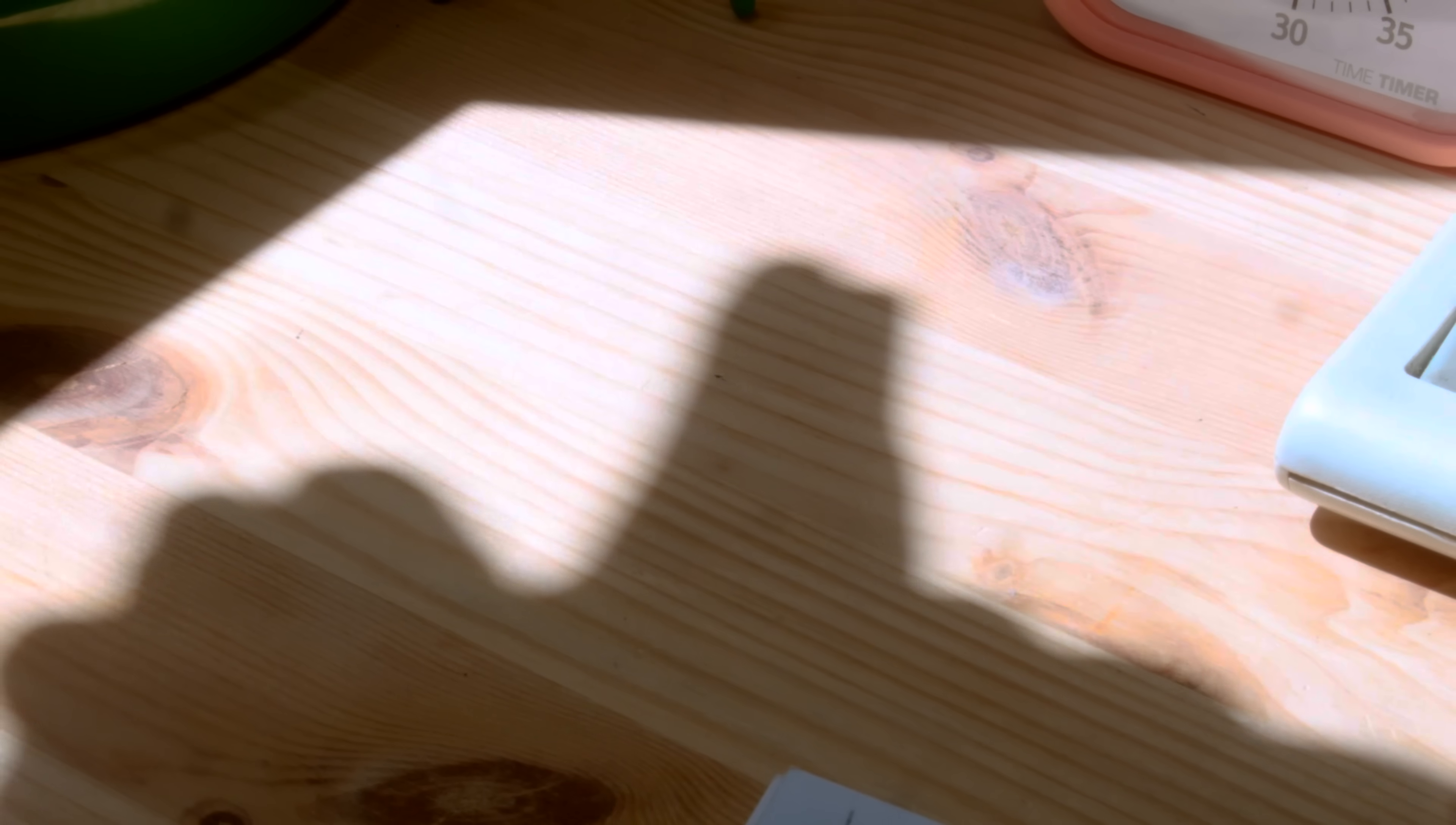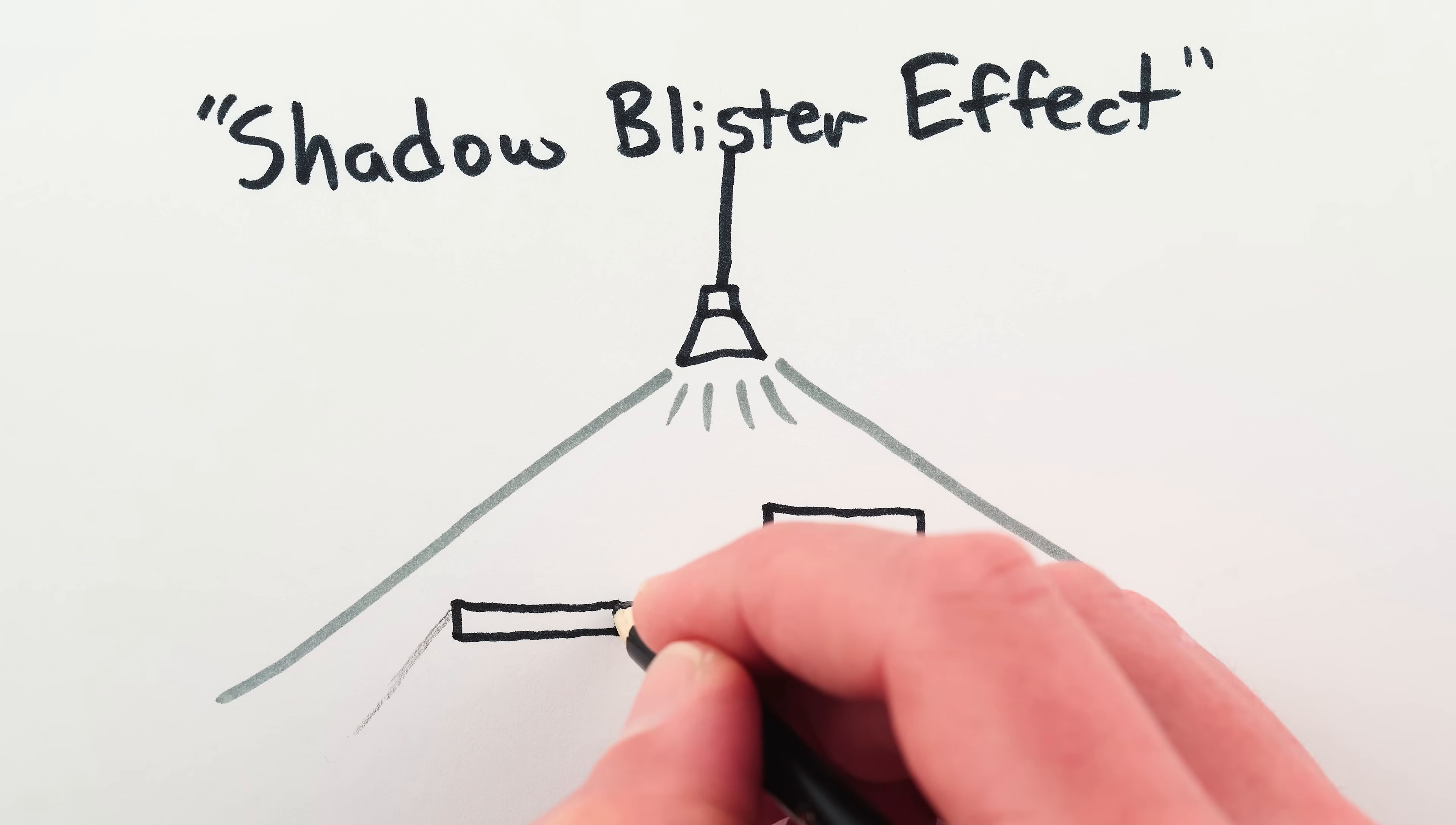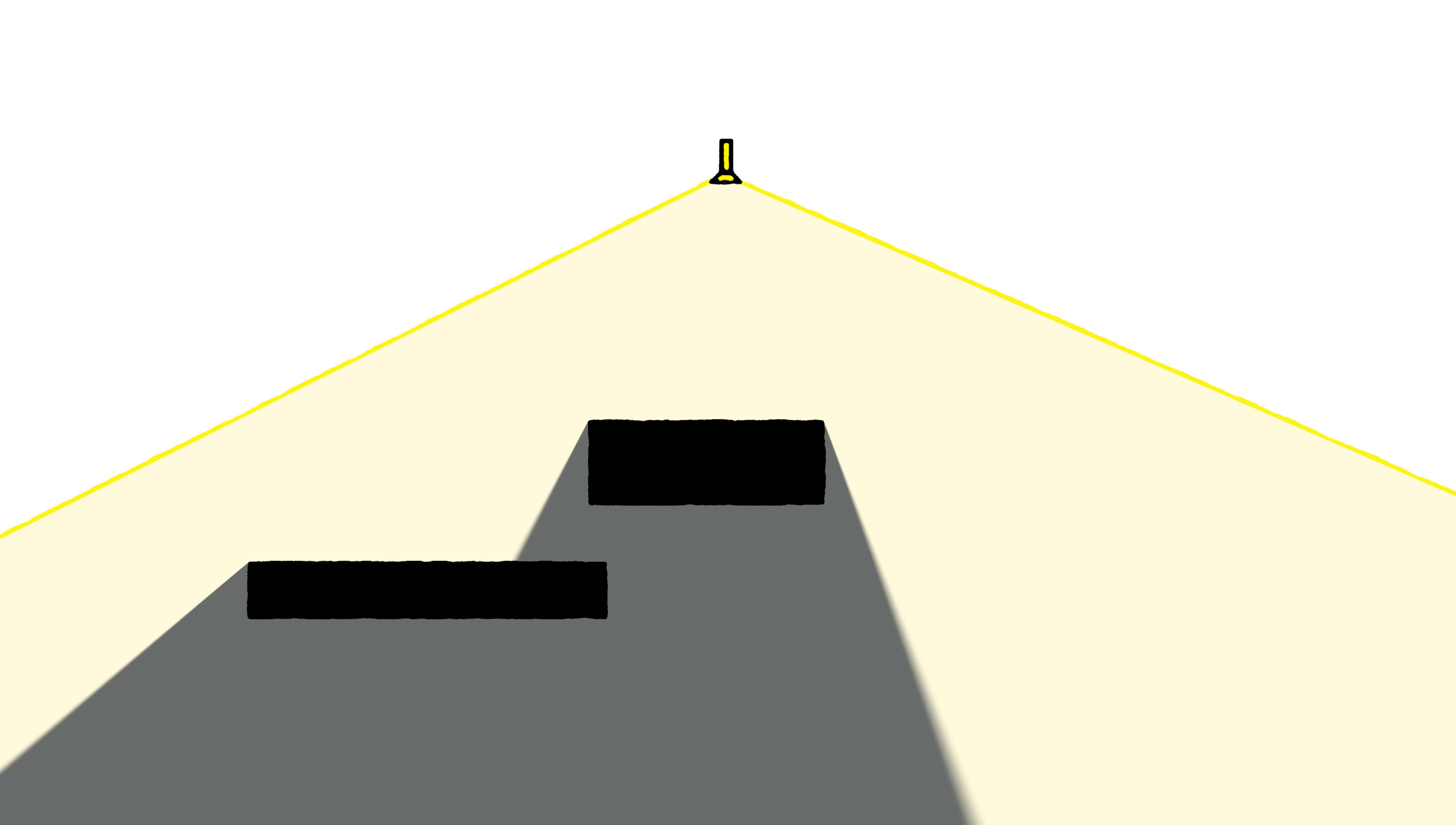Here's the thing. This touching shadow phenomenon, which is also called the shadow blister effect, happens when you have a light source shining on two objects that are different distances away from the light. The farther one on its own casts one shadow, and the near one casts another, and when those shadows get close, the near object's shadow blocks the far object's shadow, and the shadows appear to merge.